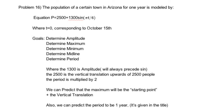This is a quick tutorial on breaking apart a pre-calculus question. The question can be found here, problem number 16. It states the population of a certain town in Arizona for one year is modeled by p equals 2,500 plus 1,300 sine of parentheses pi t divided by 6, where t equals 0 corresponding to October 15th.